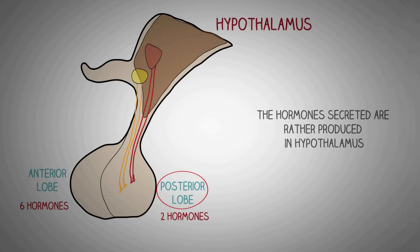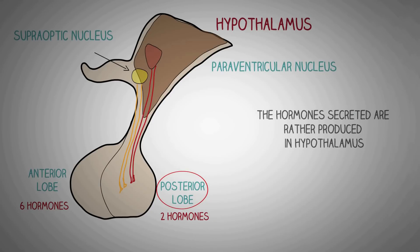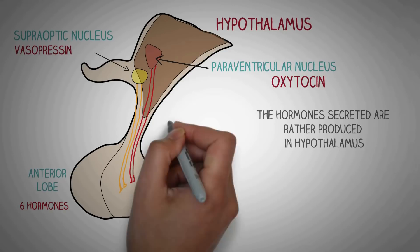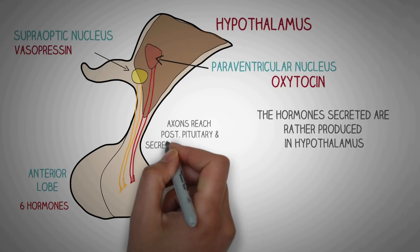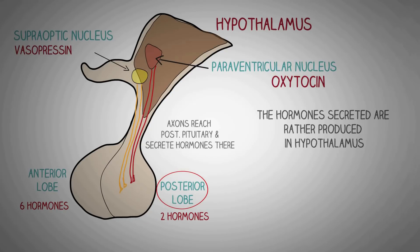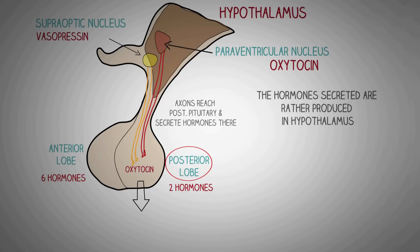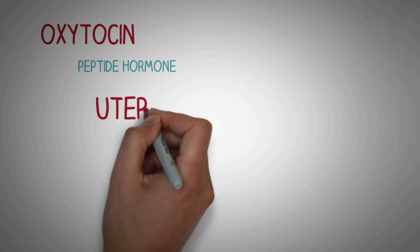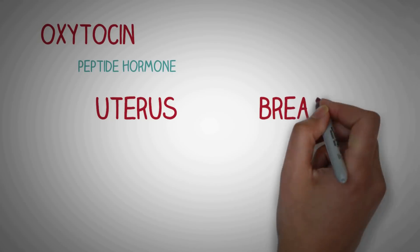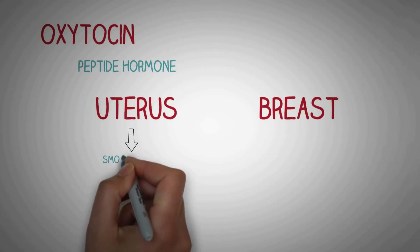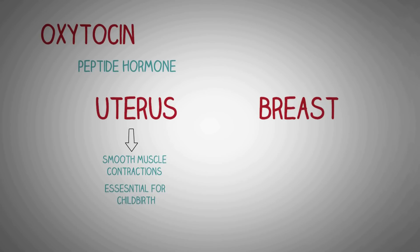The hypothalamus has two important collections of neurons: the supraoptic nucleus and the paraventricular nucleus. The paraventricular nucleus secretes oxytocin, whereas the supraoptic nucleus secretes vasopressin, or antidiuretic hormone. The axons of these neurons directly reach the posterior pituitary and secrete these hormones there, which are then released into the blood circulation. Oxytocin mainly acts on the uterus, causing powerful smooth muscle contractions essential for childbirth, and on the breast, where it is essential for lactation.